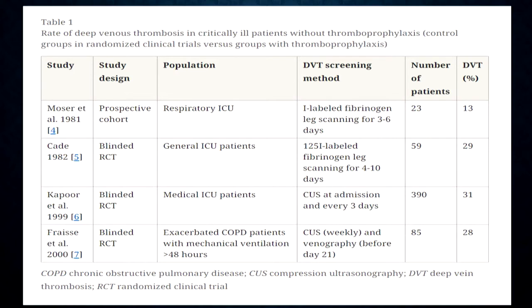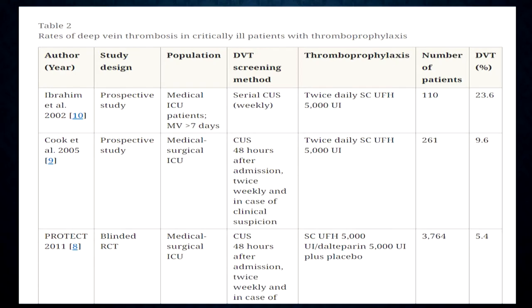If you did not give thromboprophylaxis in the critically ill patient, the incidence of DVT is significantly high, whether in the respiratory unit, general ICU, medical units or those with lung or post-operative issues. There is thrombosis in ICU patients — that is clearly published. But even if you do give thromboprophylaxis, the incidence has come down but it has not gone. Your ability to give thromboprophylaxis does not always yield a return of no clot — we can't always prevent thrombosis.